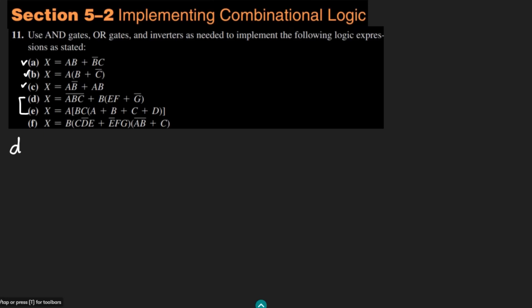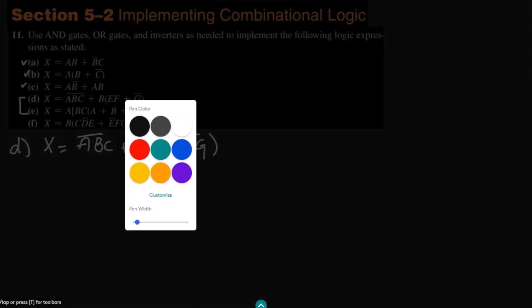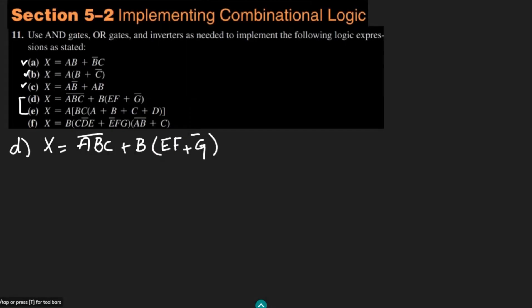Let me start from part D. Here we have the expression: x equals a·b·c whole complement, plus b, and with it I have e·f plus g complement. The first step is to see how many inputs we will have. The domain of it is a, b, c, d, e, f, g.